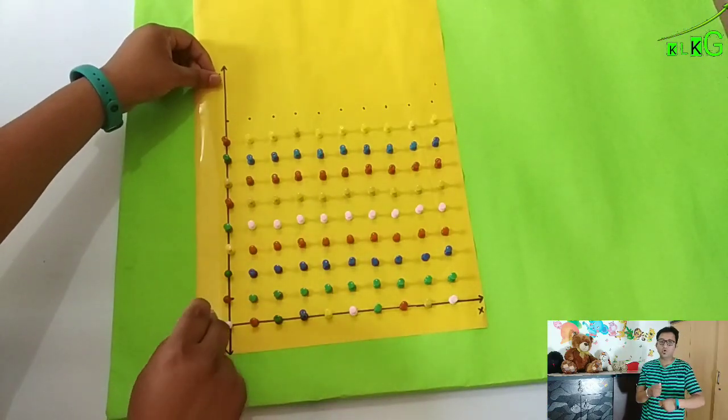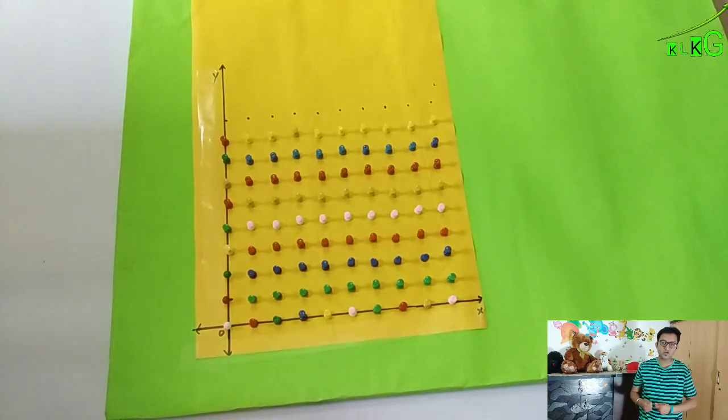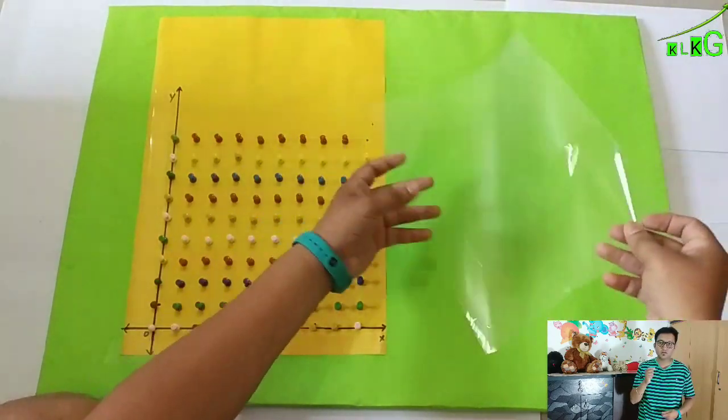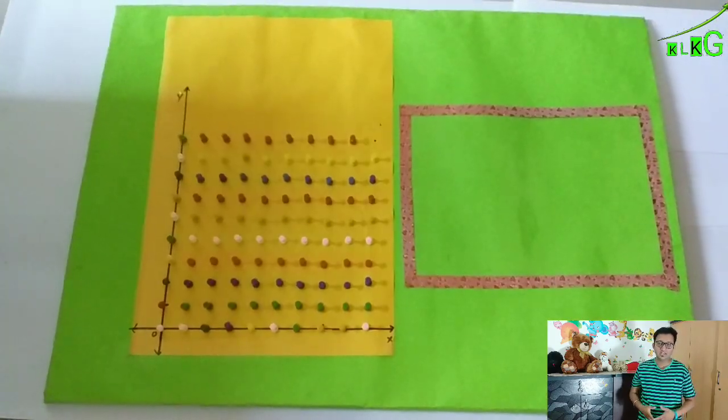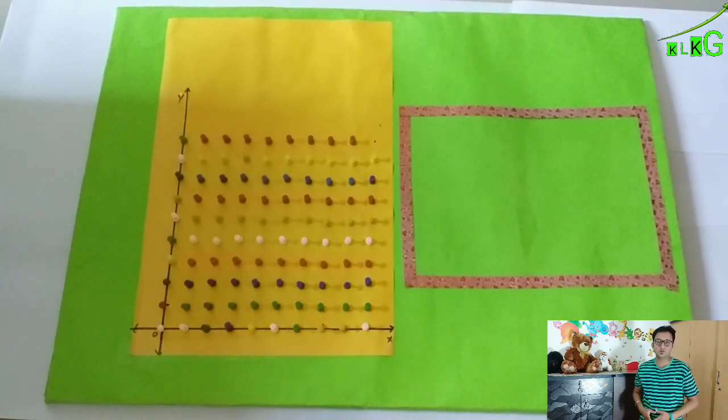Now what we have to do at the bottom and at the vertical side, we have to paste cellulotape. This cellulotape will help us to write on it. Because as we write with marker on it, we can erase it at any time when we want. We can do so many activities on it.